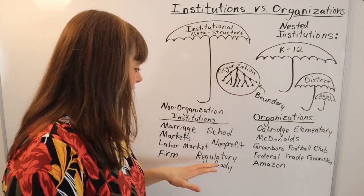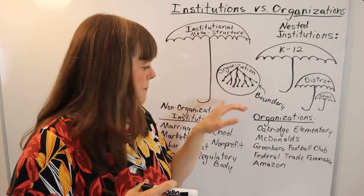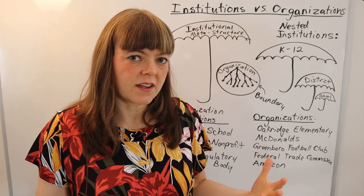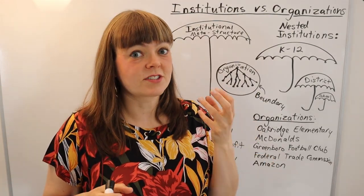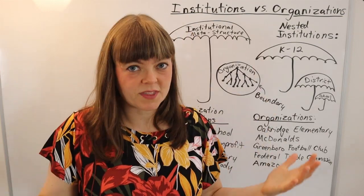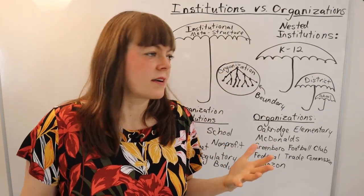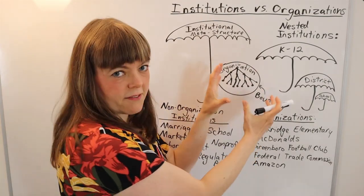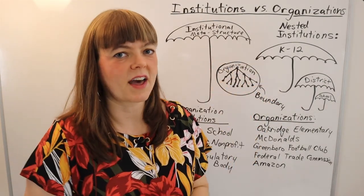A specific school is an organization, but the concept of schools and how schools work — how people understand that you show up at a certain time, there are different roles of student and teacher, there are rules within a school — that sort of conceptual structure is an institution. It's not an organization until you have a specific group of people with a boundary around it and a purpose.